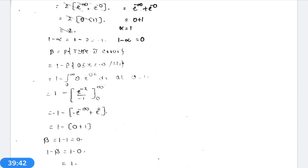I have completed the problems on finding alpha (level of significance), power of the test (1 − beta), 1 − alpha, and 1 − beta. Next, I will explain a very important theorem — the Neyman-Pearson Fundamental Lemma on testing of hypothesis — which is the fundamental theorem on simple null hypothesis against simple alternative hypothesis. This will be discussed in lesson number 3. Thank you.